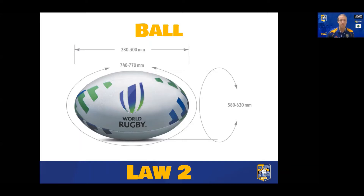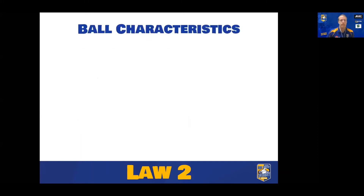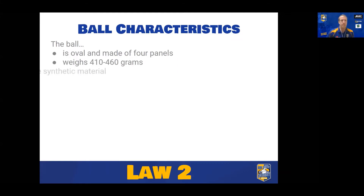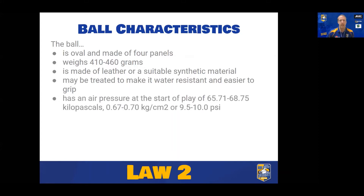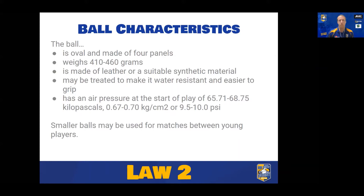The characteristics of the ball: it's oval, made of four panels, weighs around mid-400s in grams, must be made of leather or synthetic material, and can be treated to make it water-resistant. Air pressure is around 10 PSI. You can use smaller balls for matches between young players — size 4, size 3, etc. — in junior rugby. And you can have spare balls available during a match.